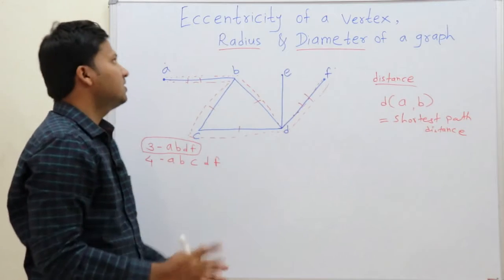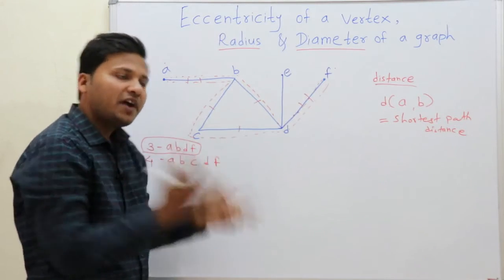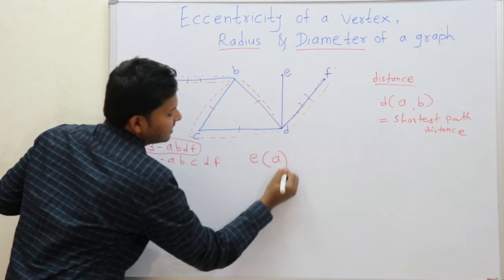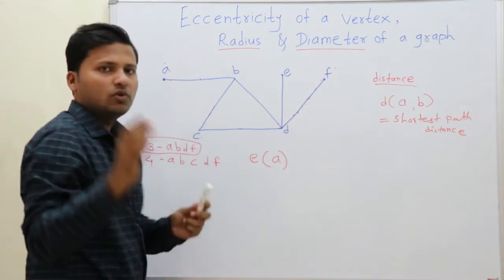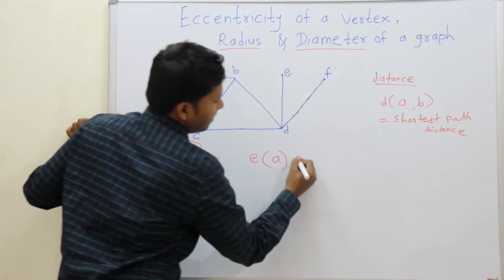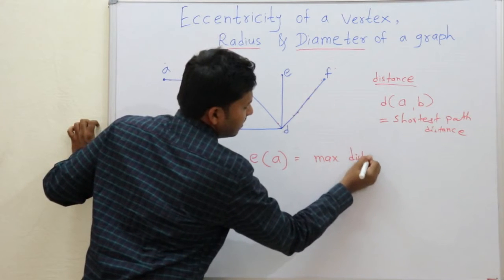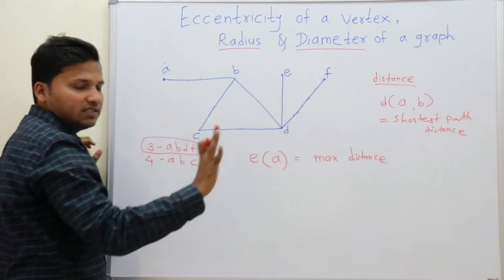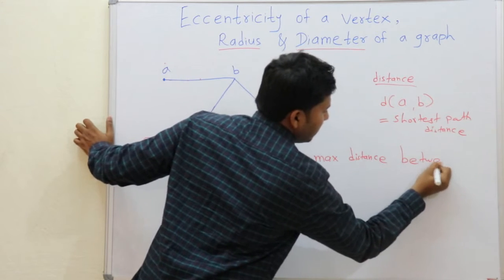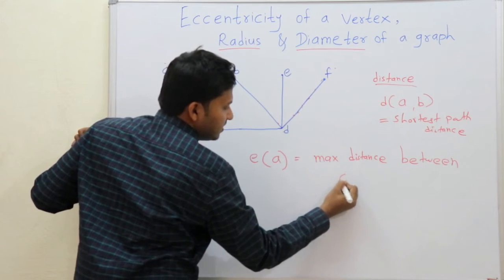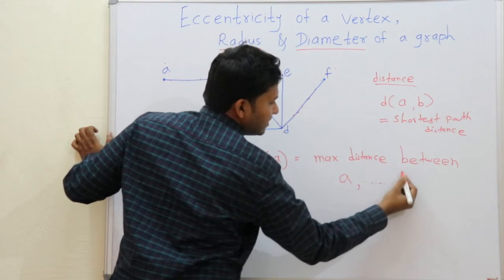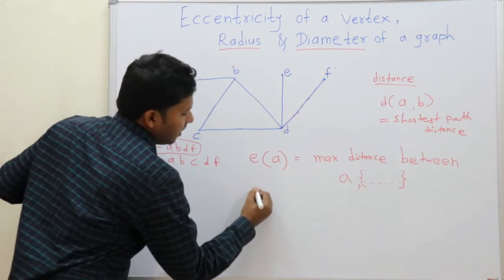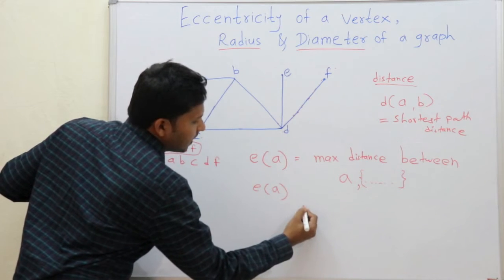This is very important for understanding the eccentricity of a vertex. The eccentricity of a vertex is the maximum distance between that vertex and all other vertices in the graph. Now let us find out the eccentricity of vertex A.